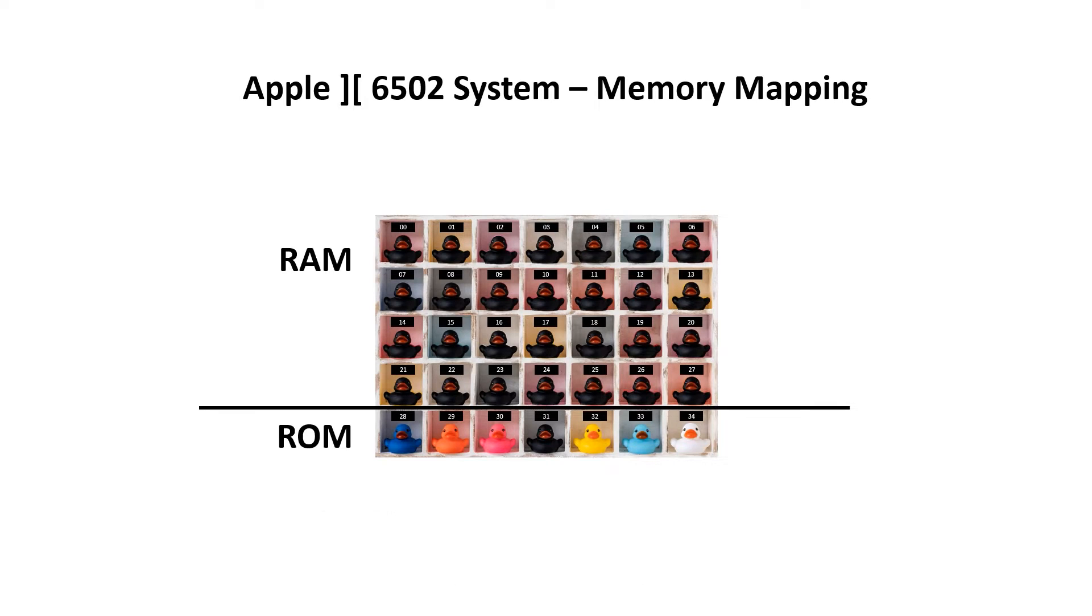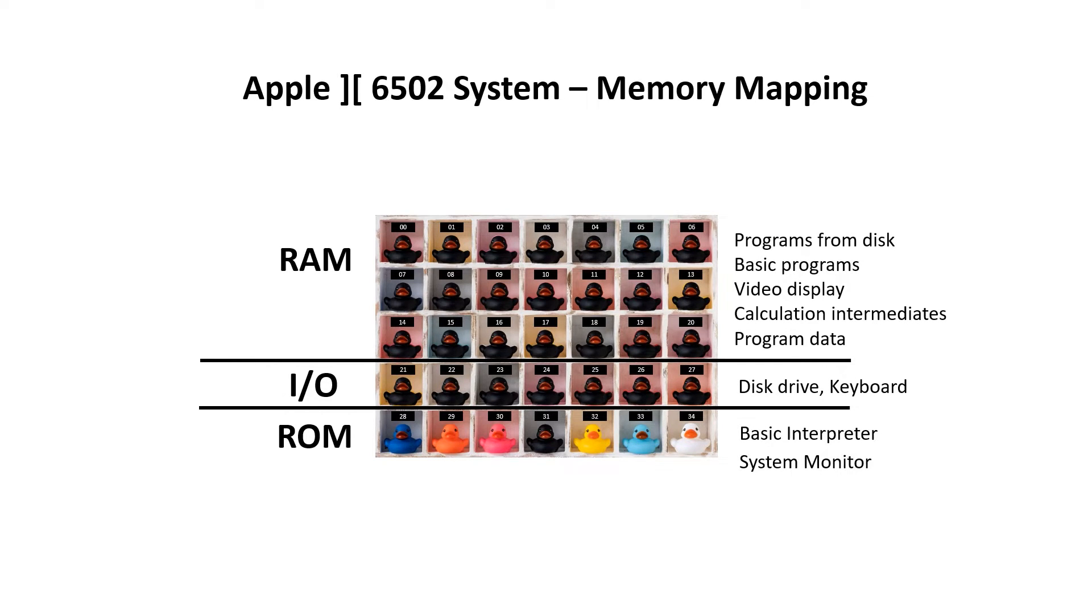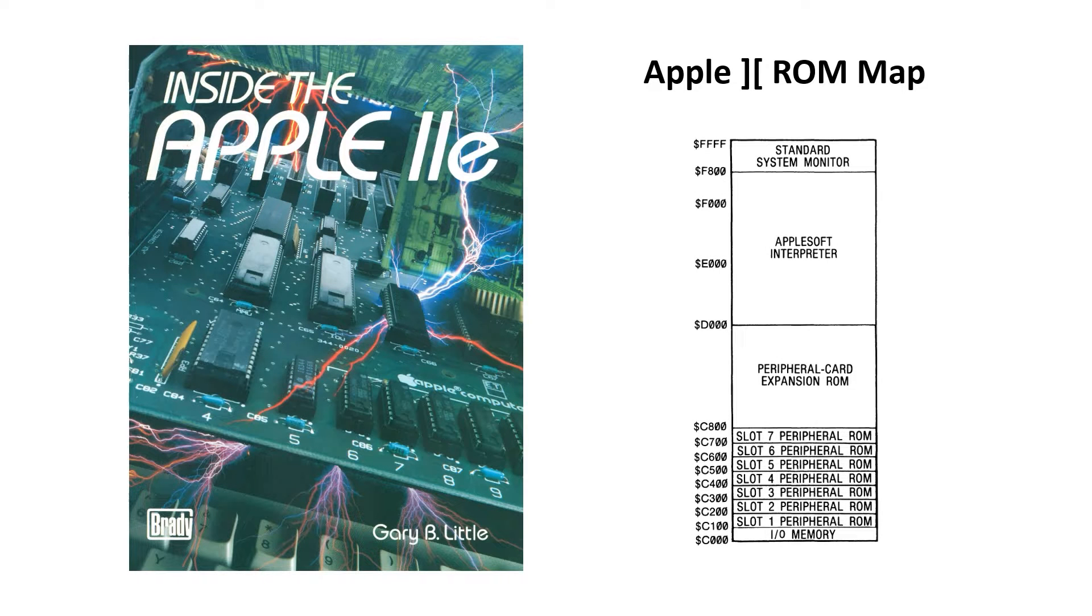On the Apple II, there's only a small slither of address space set aside for input and output devices, such as the keyboard and the floppy disks. This space is located between C000 hex and C0FF hex. I'll often write this as C0XX, but I'll refer to it as the C1000 page, and the main reason I'm doing that is so that YouTube doesn't get the wrong idea about this video.